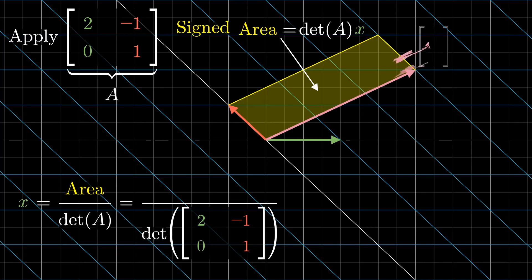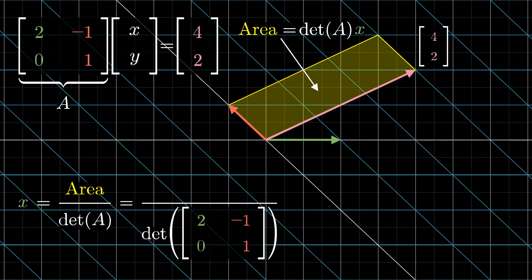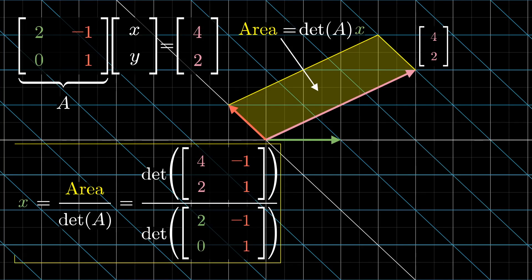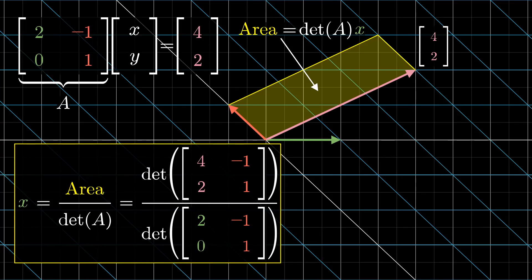And, similar to what we did before, you can compute the area of that output parallelogram by creating a new matrix whose first column is the output vector, and whose second column is the same as the original matrix. So, again, just using data from the output space, the numbers we see in our original linear system, we can solve for what x must be. This formula for finding the solutions to a linear system of equations is known as Cramer's rule.